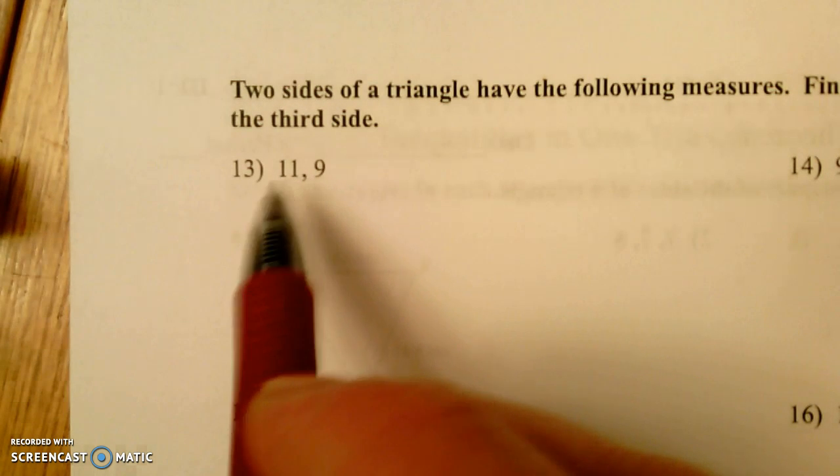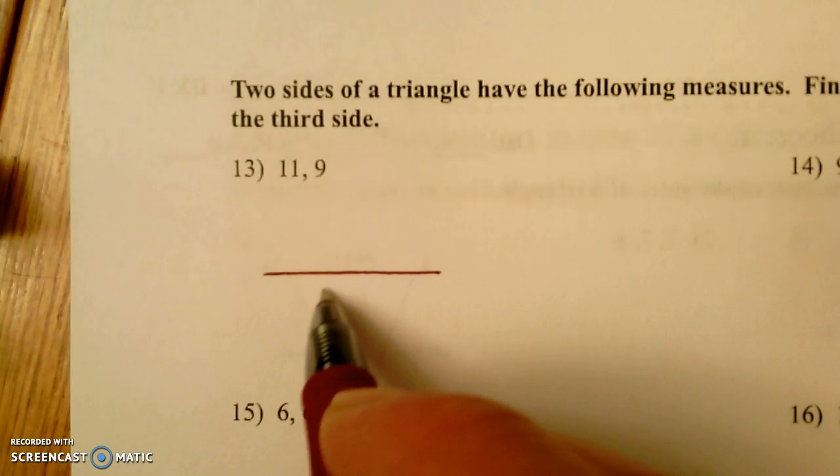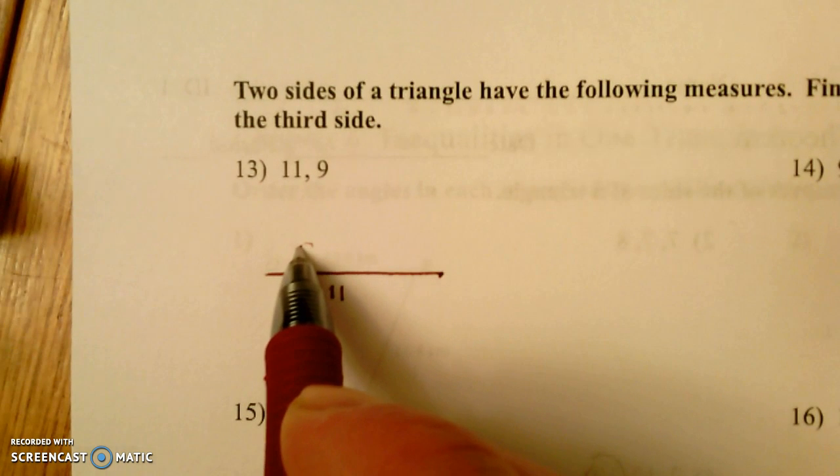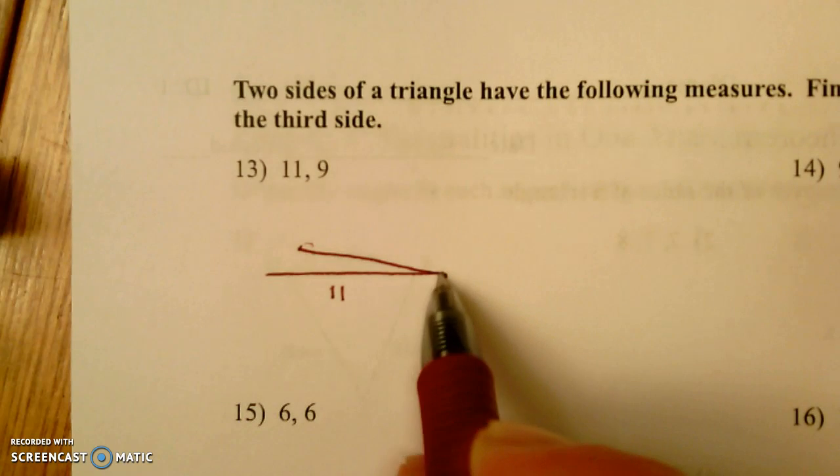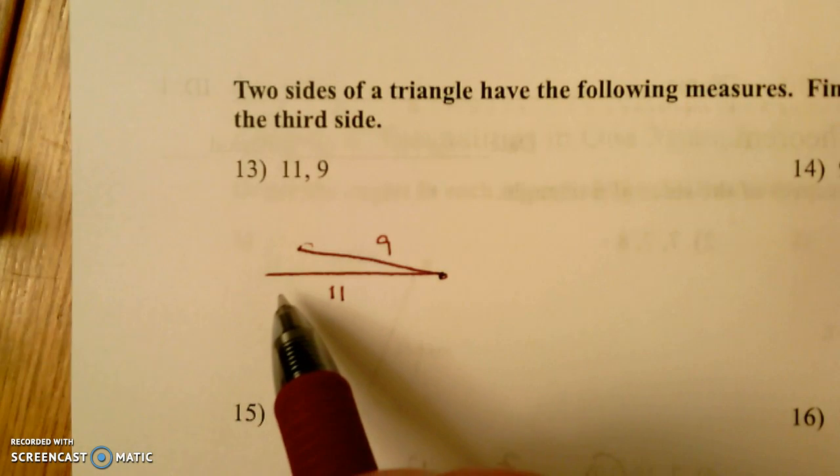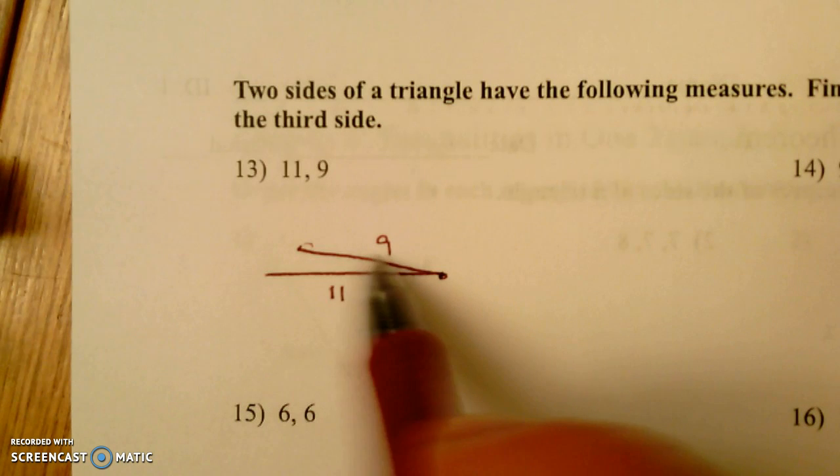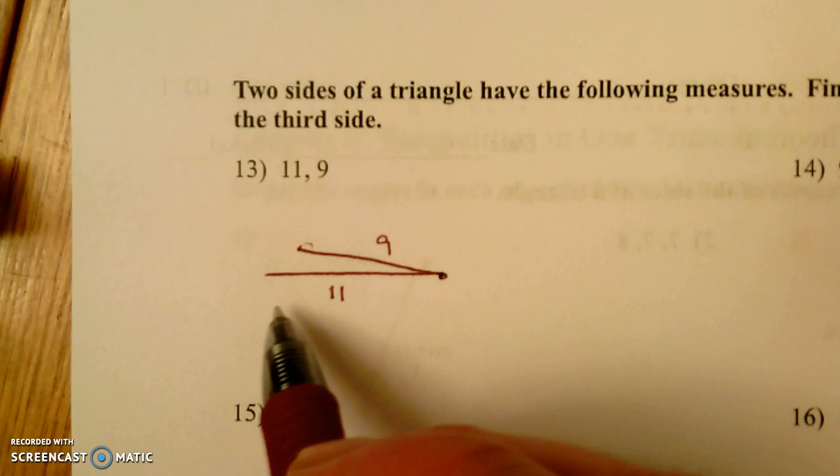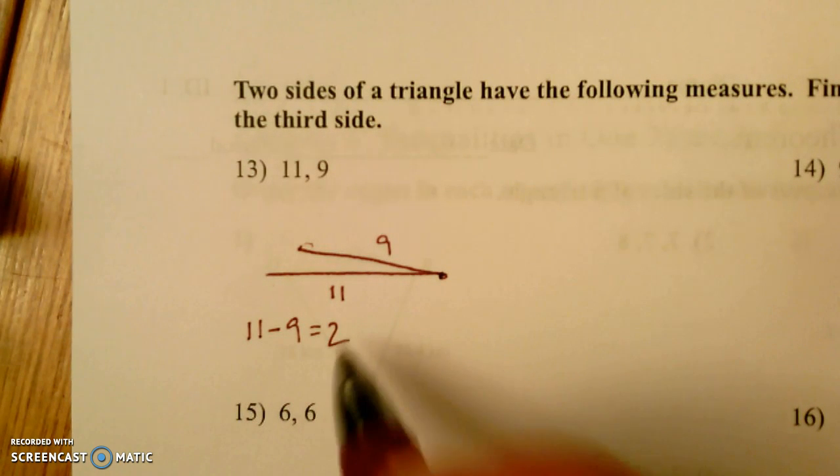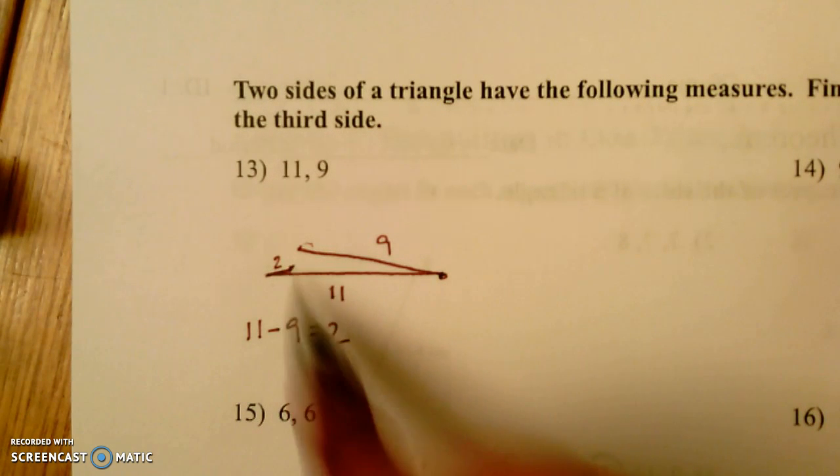So let's look here, for example, 11 and 9. Let's say here's our side that's 11 units long and let's say that here's our side that's 9 units long, and say we're going to fold it all the way over until they touch. If they fold all the way over until they touch, there would still be a little bit. 11 minus 9 equals 2. The other side would have to be at least two units long.